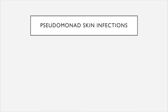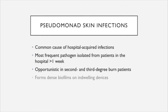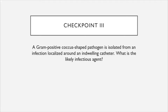Pseudomonas aeruginosa is also a common cause of hospital-acquired or nosocomial infections. It is the most frequent pathogen isolated from patients who have been in the hospital for over one week, and is particularly opportunistic in second- and third-degree burn patients. It is also capable of forming dense biofilms on indwelling medical devices like catheters. As a checkpoint: if you are looking at a gram-positive coccus-shaped pathogen isolated from an infection localized around an indwelling catheter, what would be the most likely infectious agent?